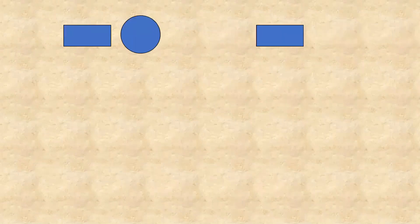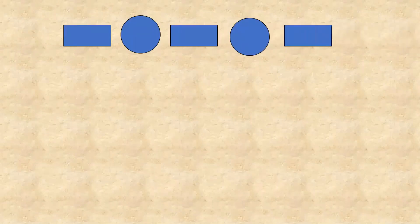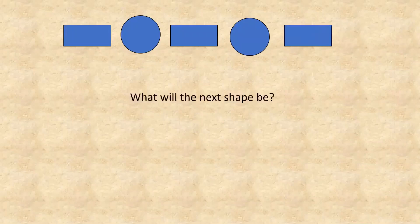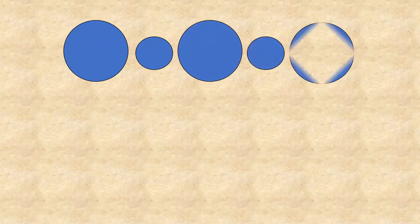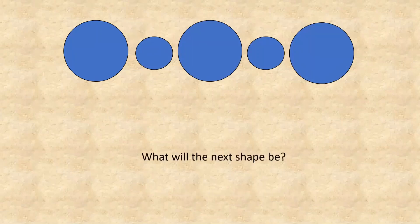Here I'm showing you a few shapes and you have to tell me the pattern. This is a very simple one: rectangle, circle, rectangle, circle, rectangle — so the next shape will be circle. Next: small circle, big circle, small circle, big circle — two designs are repeating again and again, so the next will be small circle.